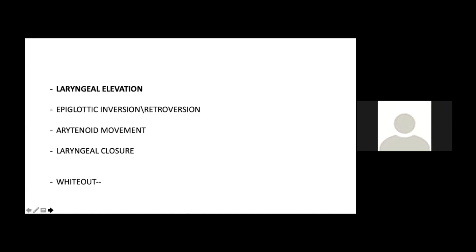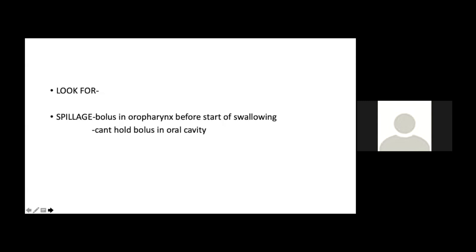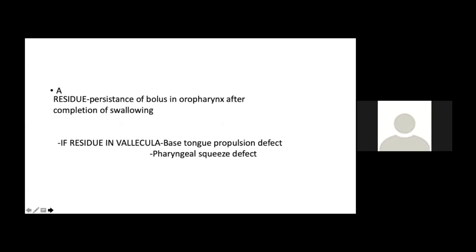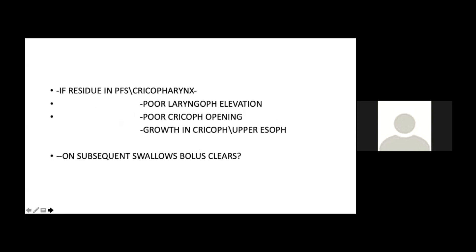The white-out — when the pharynx contracts during swallowing, the endoscope sees nothing for a fraction of a second — indicates normal pharyngeal squeeze. If there is no white-out, pharyngeal squeeze is abnormal. We also look for spillage (bolus in oropharynx before swallowing starts), residue after swallowing (vallecula residue suggests tongue base or pharyngeal squeeze defect; cricopharyngeal or piriform residue suggests poor laryngopharyngeal elevation or cricopharyngeal opening defect), and whether the bolus clears on subsequent swallows.